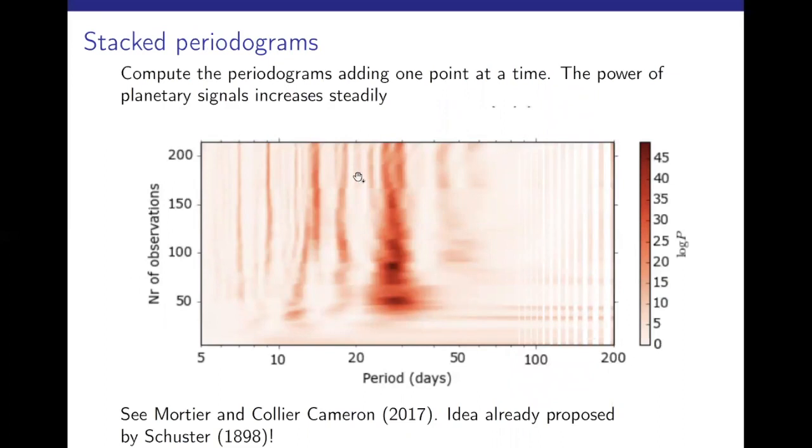The stacked periodograms, which is described in Mortier and Collier Cabron 2017. Here, the idea is fairly simple. You compute the periodogram and each row here is a periodogram, but with different number of observations. And the idea is that if the signal comes from a planet, then the power should increase steadily. But if the planets comes from, if the signal comes from stellar activity, then it might go up and down and not stabilize the variable, which is apparently the case for the signal. And something funny to mention that the idea of stacking the pair of the runs one after the other was already mentioned by Schuster in his introductory paper of the periodogram, more than 120 years ago.